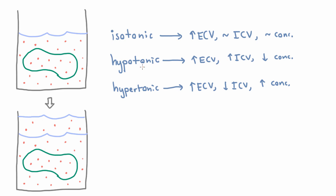Hypotonic is going to give you the least extracellular volume increase, because you put in a liter but then some of that water is going to go into the cells, so you're really giving a little less than a liter.